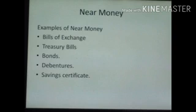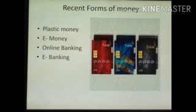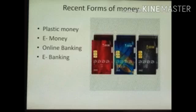Next we see near money. The final stage in the evolution of money has been the usage of bills, treasury bills, bonds, debentures, savings certificates, etc. Recent forms of money: the first one is plastic money. The latest type of money is plastic money in the form of credit cards and debit cards, aimed at cashless transactions.